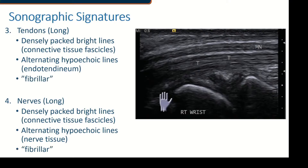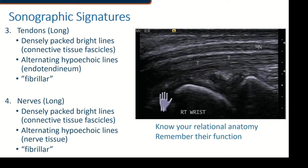These structures are often described as 'fibrillar,' so if you see that term in your reading, they're usually referring to tendons and nerves. Know your relational anatomy and know their function. The reason I say know their function is that a median nerve and the flexor tendon deep to it look very similar on a static image. But if you move the fingers, you would note that the tendon will be sliding underneath the nerve, which helps you distinguish them dynamically.